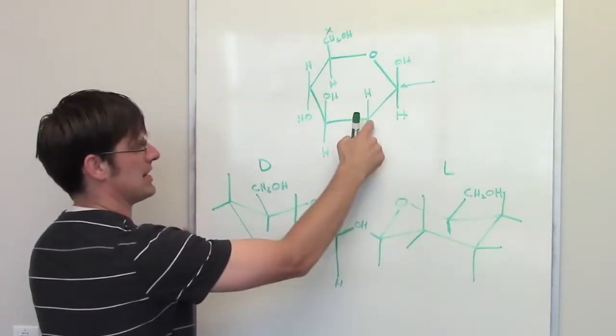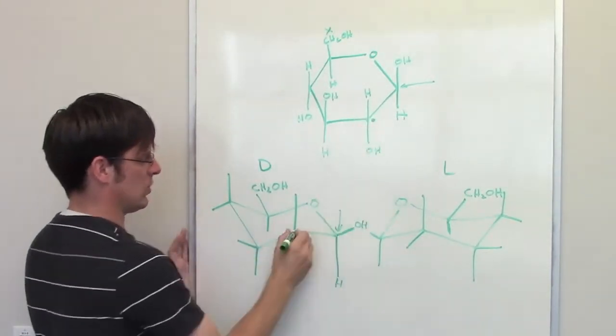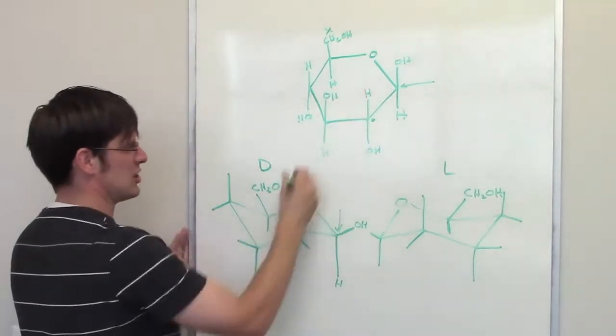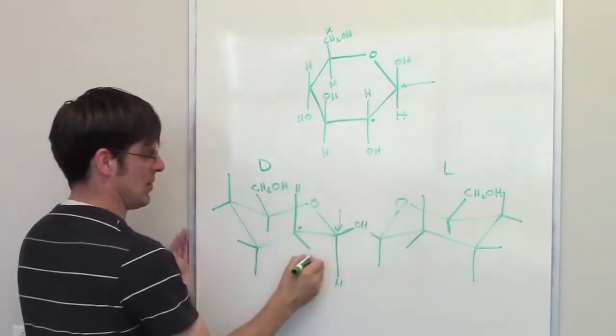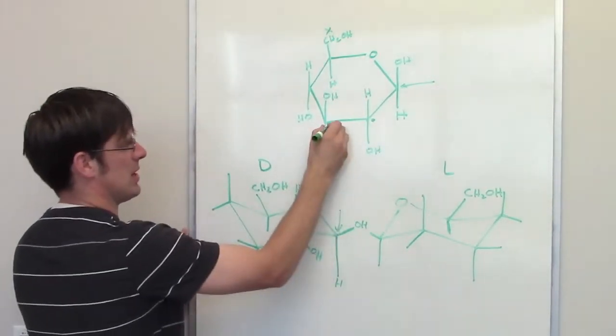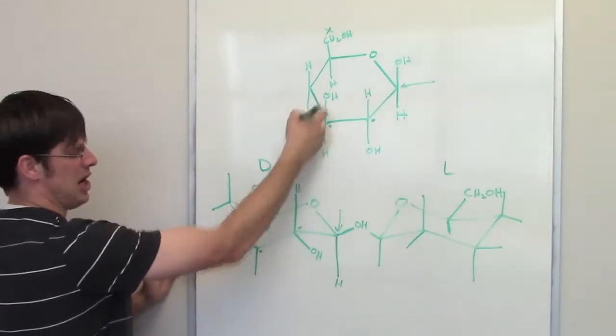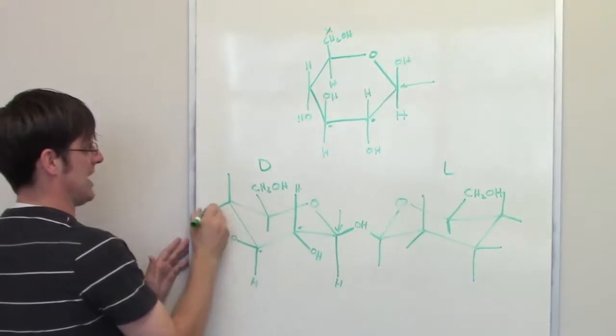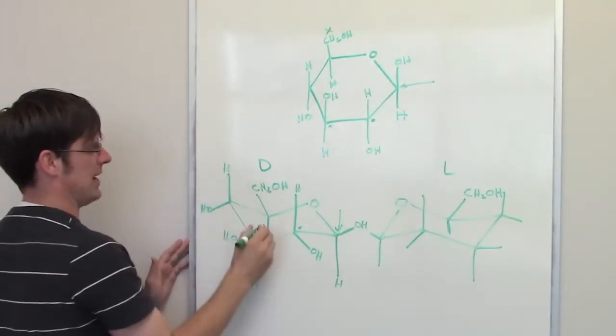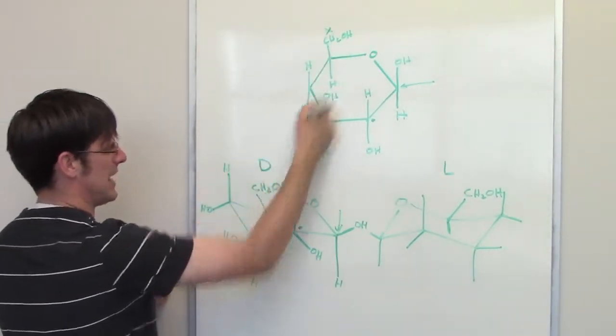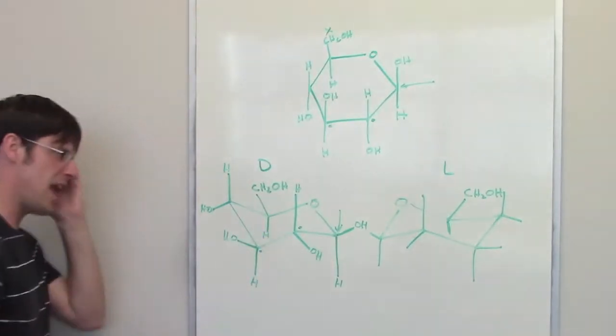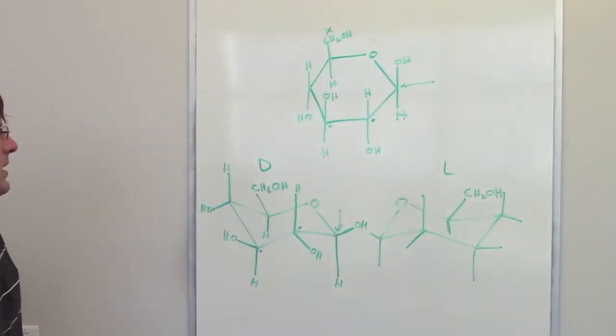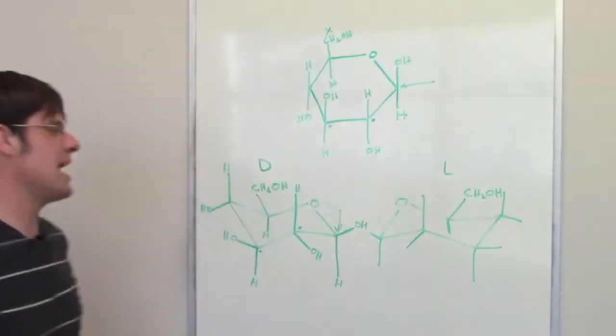Now I am at my next carbon right here, which corresponds to this carbon right there. H is going up, OH is going down. Next carbon right here, which is this carbon right here, OH is going up, H is going down. OH is going down here, H is going up there. And then over here I have CH2OH with an H tucked underneath. That is the chair structure of this Hayworth projection.